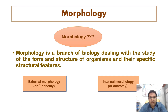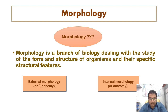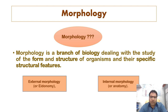So if we are talking about the form and structure of internal parts like bones and organs, we call it internal morphology or anatomy. So morphology is basically a branch of science which deals with the study of the form, structure, appearance, and specific structural features of organisms.